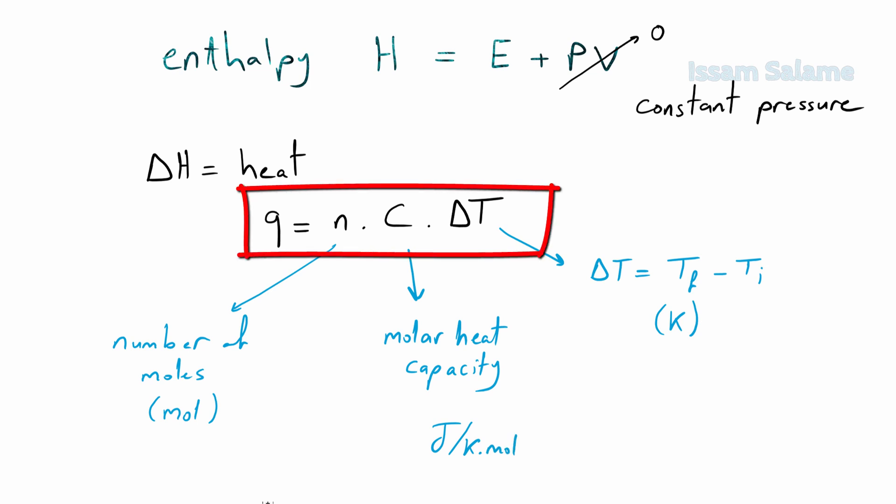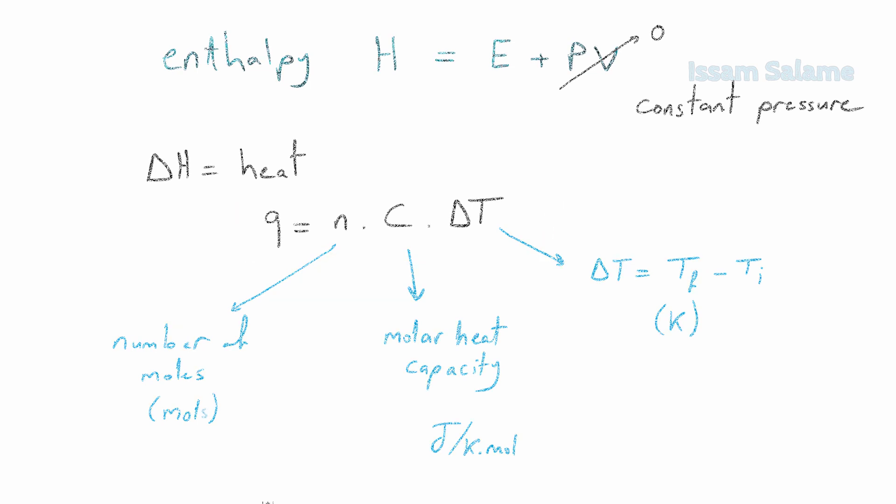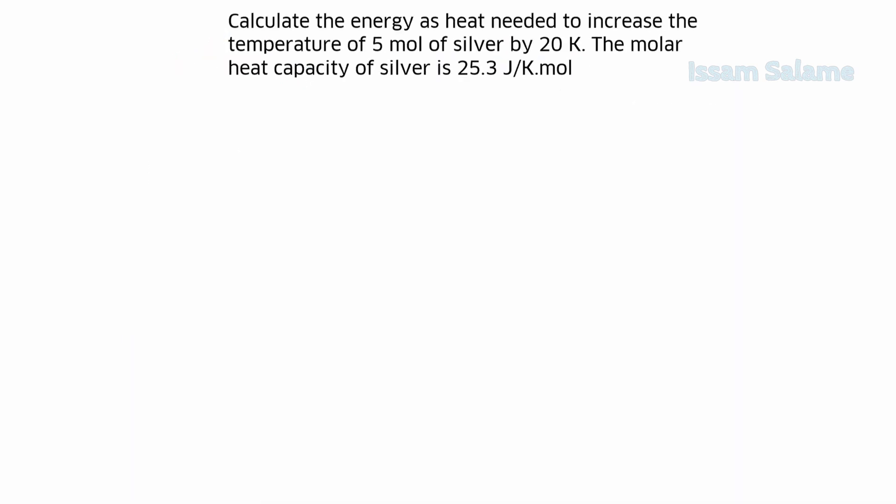And now's the time to practice a couple of questions using the following formula. Calculate the energy as heat needed to increase the temperature of five moles of silver by 20 K. The molar heat capacity of silver is 25.3. Usually in such questions I like my students to write the given - it would give you more time to organize your ideas and also to give you more time to check if there is any units to convert.